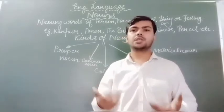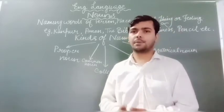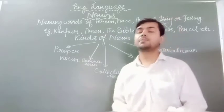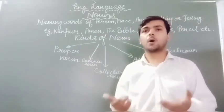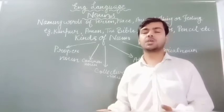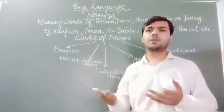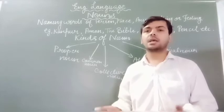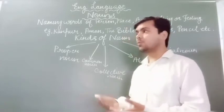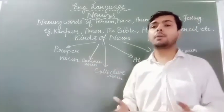Places की बात करें तो Kaanpur, Australia, New Zealand, Park One Street, Taj Mahal — यह सब places और monuments के नाम हैं। Things में — Dom's Pencil, Red Chief की shoes। Animals की names — जैसे dog का Bruno, Moti, गाय का Gauri और Dhenu — तो इस तरह से यह proper nouns में आ जाते हैं।